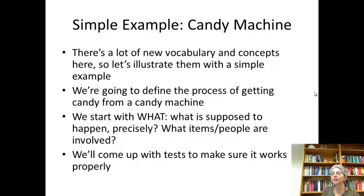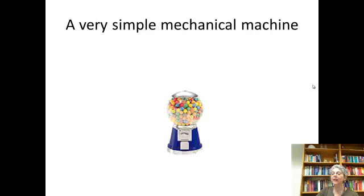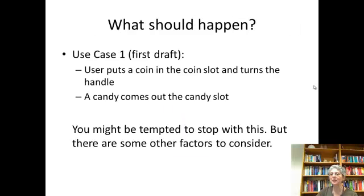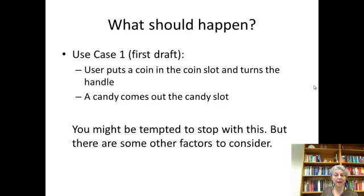There's a lot of new vocabulary and concepts here, so we're going to illustrate them with a simple example — getting candy from a candy machine. Here's a picture of a typical candy machine; hopefully most of you have interacted with one of these. So what should happen? Just off the top of our head, thinking about a simple candy machine: you put a coin in the slot, you turn the handle, and candy comes out.